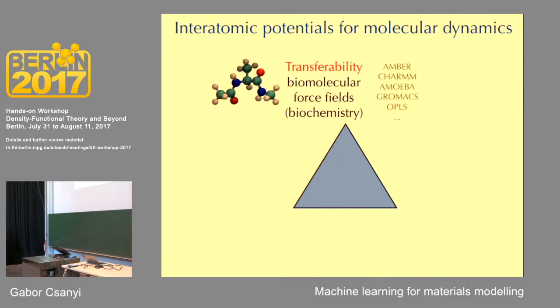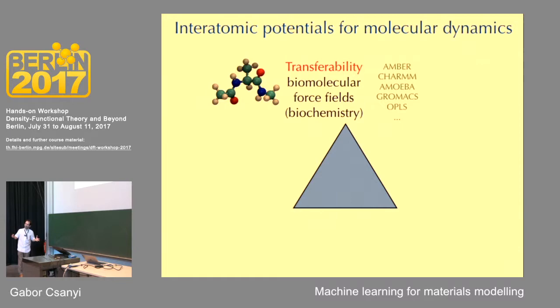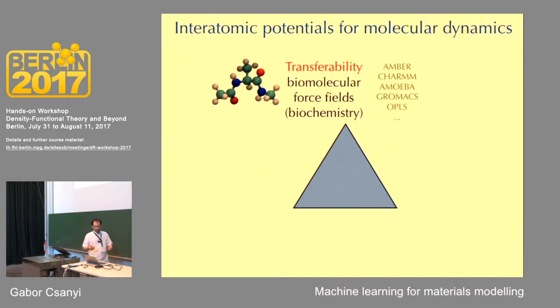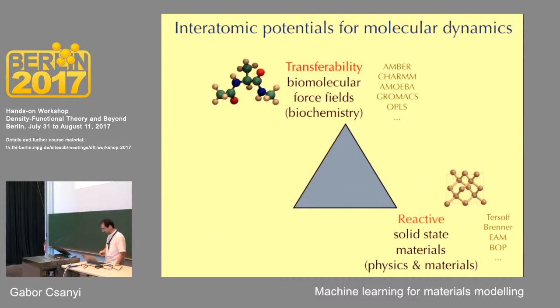I want to broaden out and talk about all the different ways people have thought about force fields, because I think machine learning will bring them together. The first type — biomolecular force fields like AMBER, CHARMM, AMOEBA, and GROMACS — are very good within their domain of application and have very good transferability. You fit them to gas phase molecules and very short peptides, then use them to simulate entire proteins. This works because the potential energy of these small molecules doesn't change very much when those molecules are in a long chain.